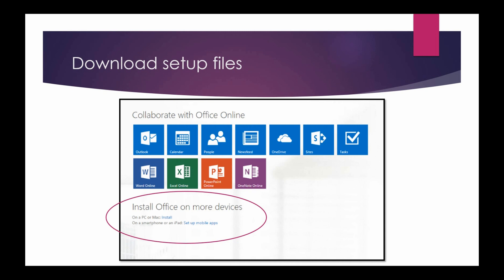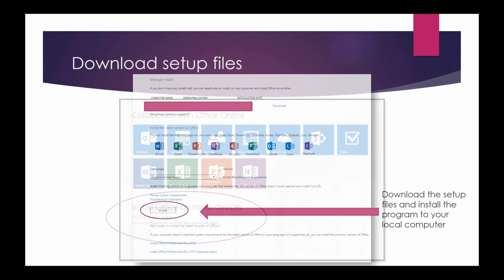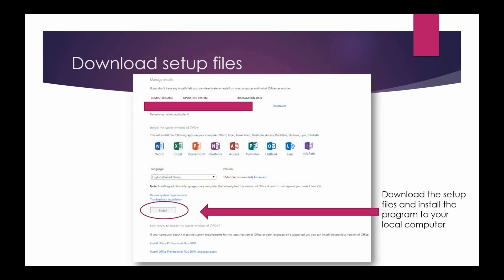Then click on Install Office on more devices and click Install. You will have up to 5 licenses, and here is where you can manage your installs, deactivate, and activate.